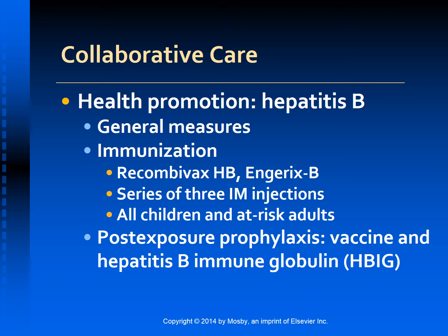For hepatitis B virus infection, the best way to reduce incidence is to identify those at risk, screen them for HBV, and vaccinate those who have not been infected. Teach individuals at high risk to reduce their risk. Good hygienic practices including hand washing and use of gloves when expecting contact with blood are important. Patients should not share razors, toothbrushes, or other personal items. Teach patients to use a condom for sexual intercourse and recommend that the partner be vaccinated.